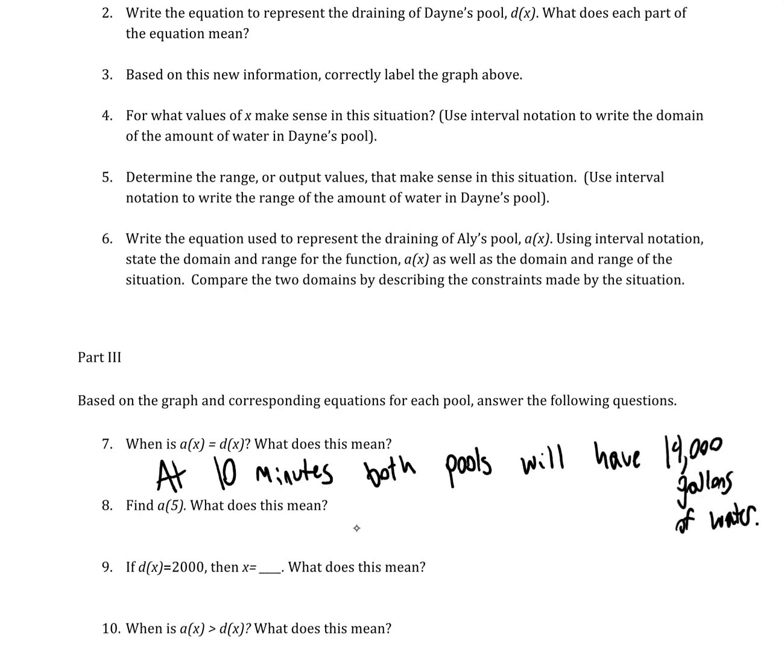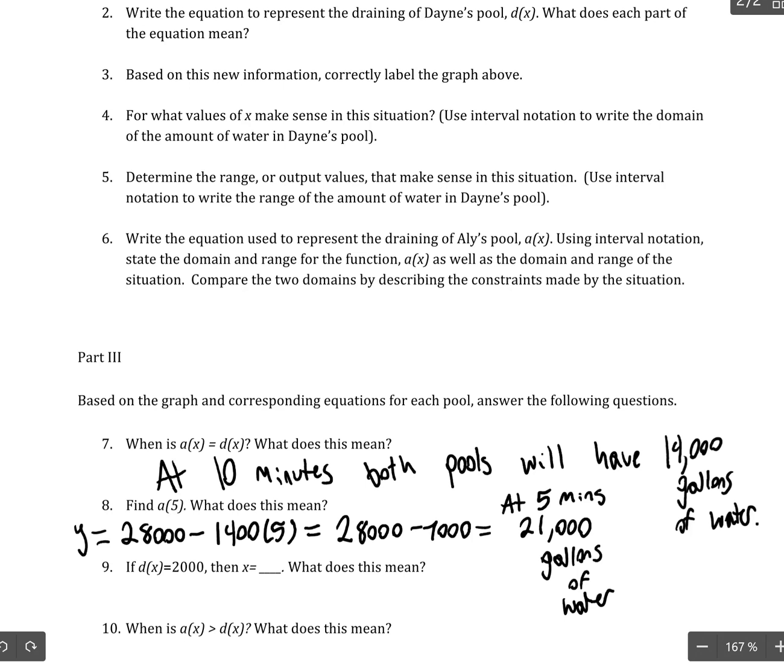To find A of 5, we need to use Allie's equation. So, Y equals 28,000 minus 1,400X. But I'm replacing X with 5. And so, that's going to be 28,000 minus 7,000 because 1,400 times 5 is 7,000. So, that's 21,000. And that means at 5 minutes, there are 21,000 gallons of water. And that is in Allie's pool.